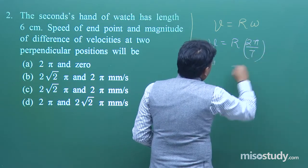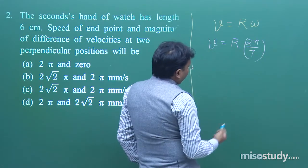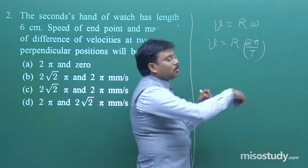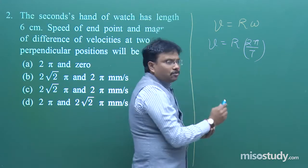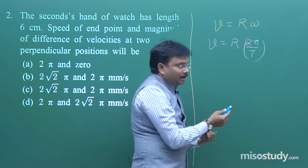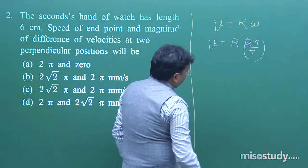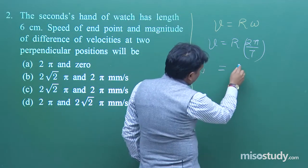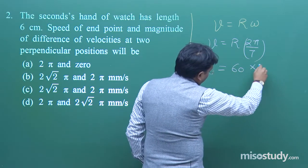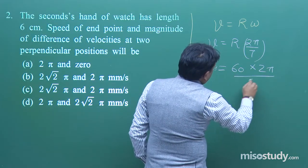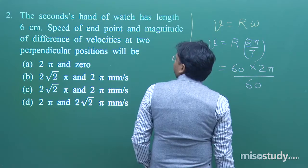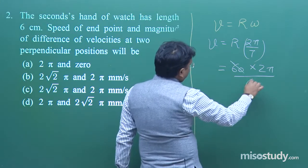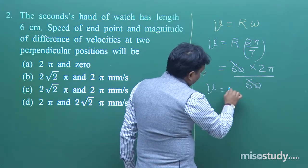ω = 2π/T. The time taken by the seconds hand to complete one round is 60 seconds. So v = r × (2π/60) = 60 × (2π/60) = 2π cm/s.